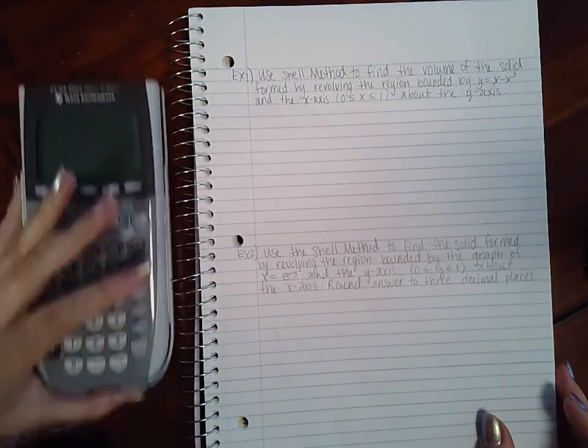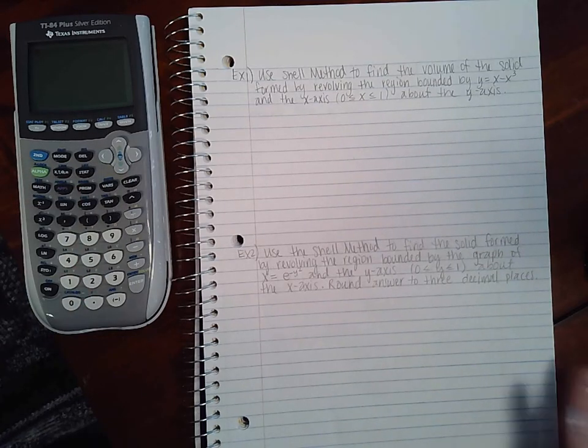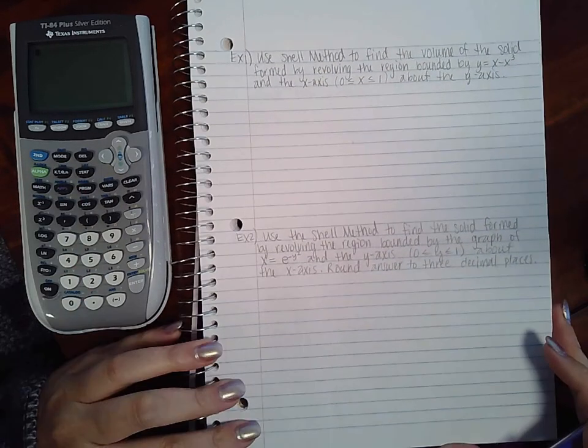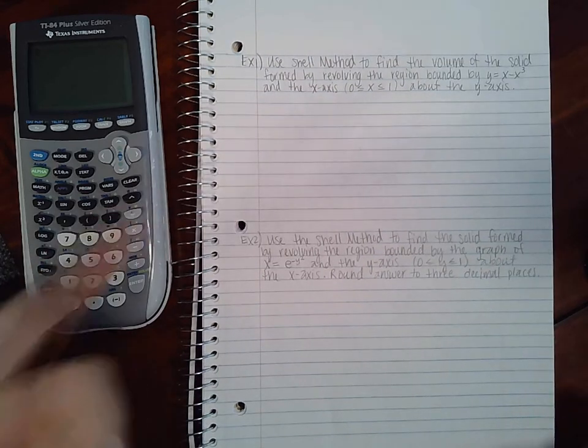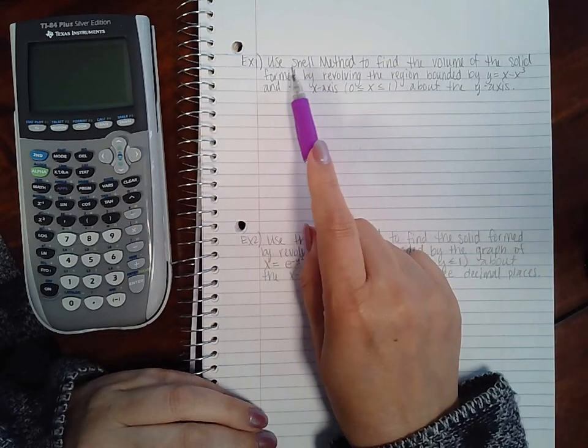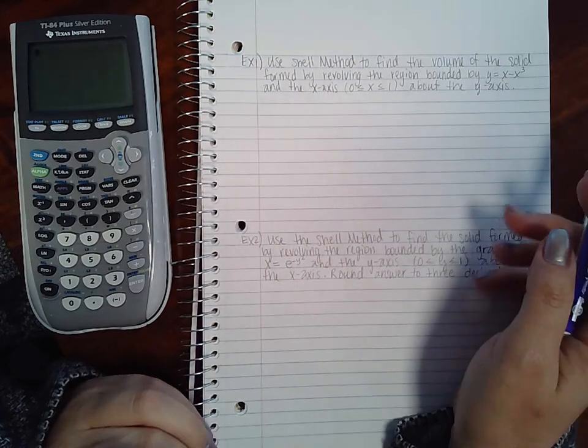This is part 2 of the 7.3 section on volume using the shell method. We're going to start with our examples. Example one says use shell method to find the volume of the solid formed by revolving the region bounded by this graph and the x-axis between the interval zero to one.